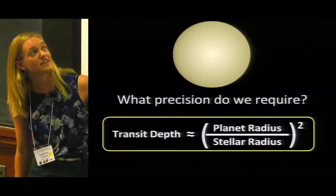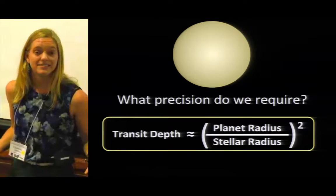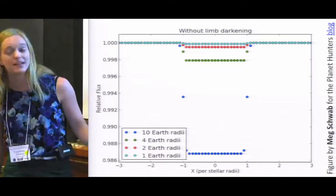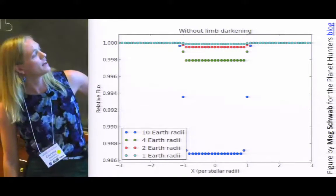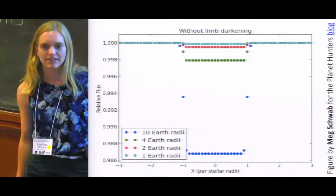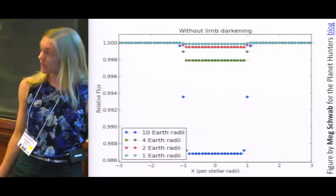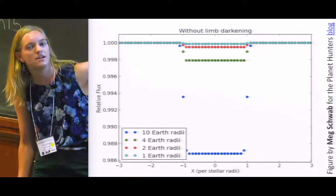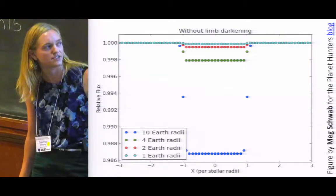So what you'd see is something more like this, where the center of the star appears brighter and the limbs appear fainter. What impact does this have on our transit curve? Here's a figure from Meg Schwamb made for the Planet Hunters blog, which is actually a really nice resource if you haven't read it before. And here she's showing the relative flux versus just a distance measure for a whole bunch of different planets crossing in front of a star, where here the blue planet is 10 Earth radii.